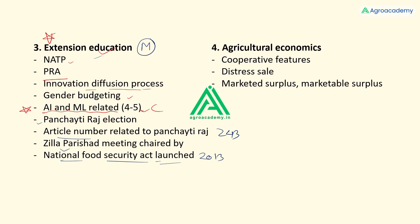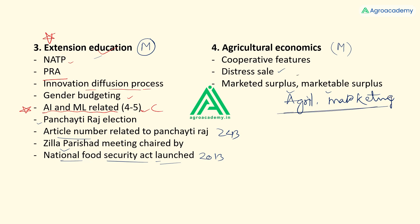Agricultural economics had slightly more conceptual questions — I would rate it as moderate. Questions on distress sale, marketed surplus, and marketable surplus appeared. If you had a good hold over the agricultural marketing part, you would have found these easy.